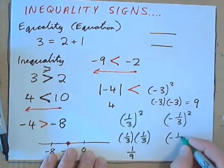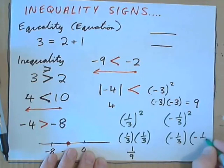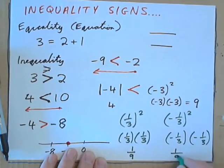Multiply these now. Negative 1 3rd times negative 1 3rd. Negative times negative, positive. 1 times 1 is 1. 3 times 3 is 9. Hmm. So, this is a 9th. And this is also 1 9th.